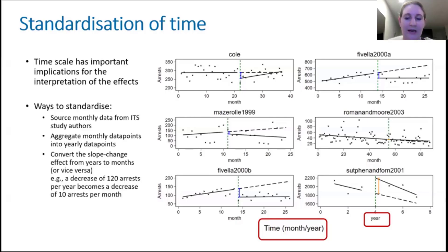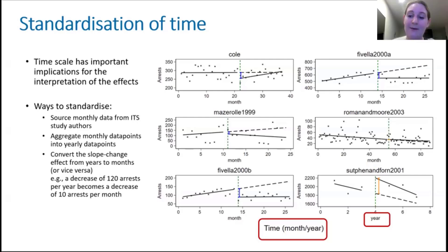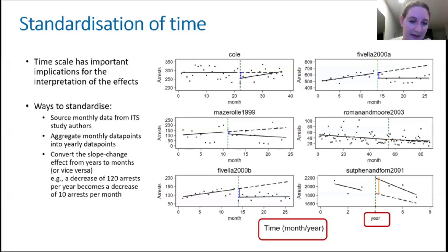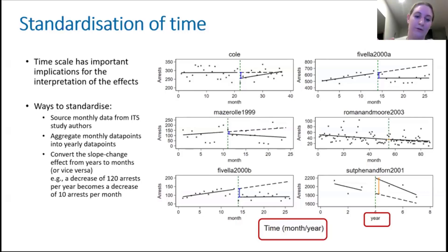So what do we do? We have a few options. We could go back to the primary study authors and see whether we can get the original data and choose the unit of time to aggregate. But that might not be possible. We could aggregate up to the largest unit of time — convert monthly data points into yearly time points. The downside is that some studies might not have enough data points in the pre- and post-interruption segments once aggregated. For example, one study might have only one yearly data point in the pre-interruption segment.